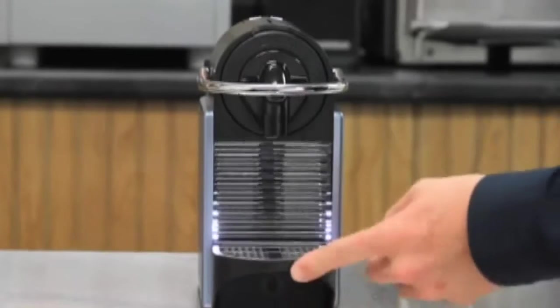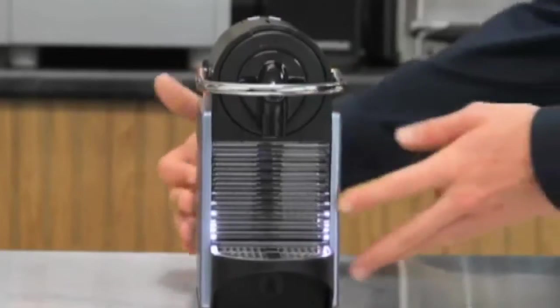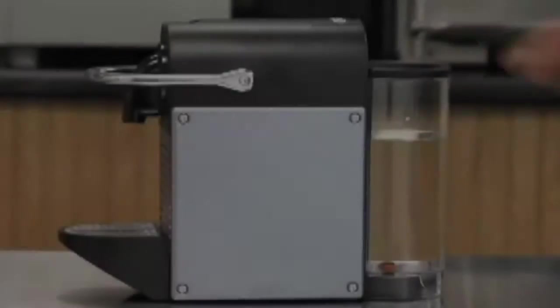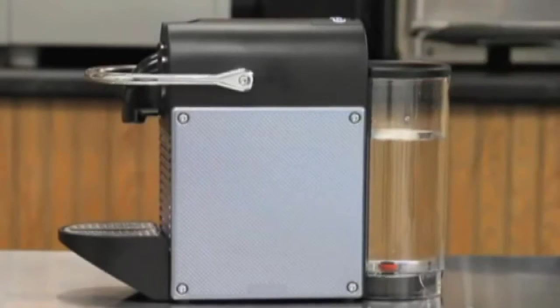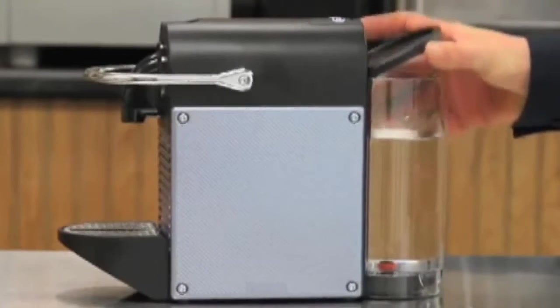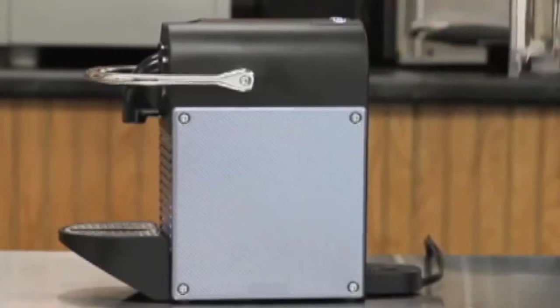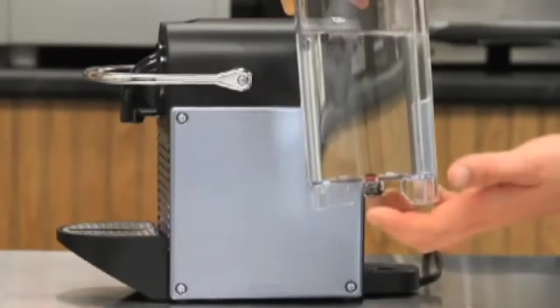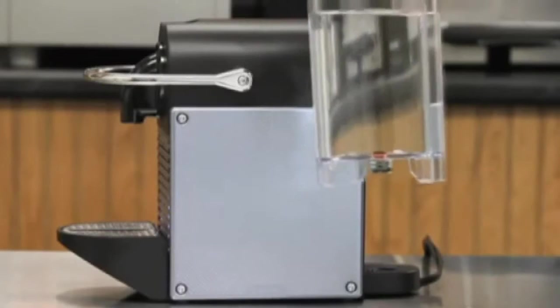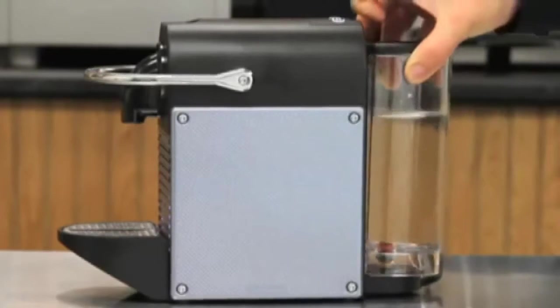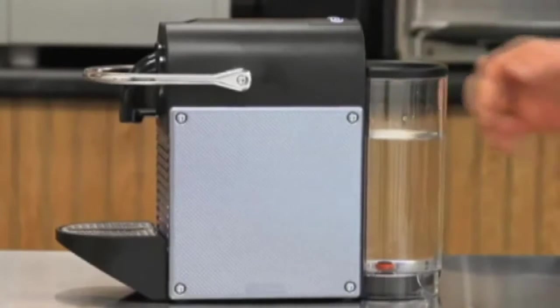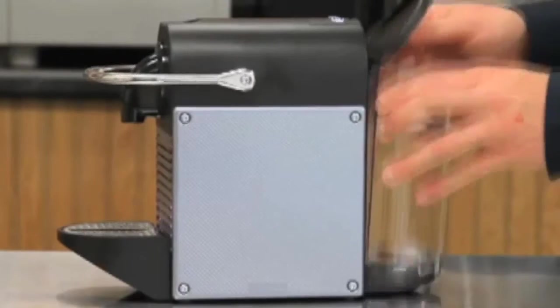On the back of the machine, you have your water reservoir. The water reservoir on this machine is 24 ounces. It's easily removable, snaps into place, and has a seal below which allows the water to come out once it's been put into place.